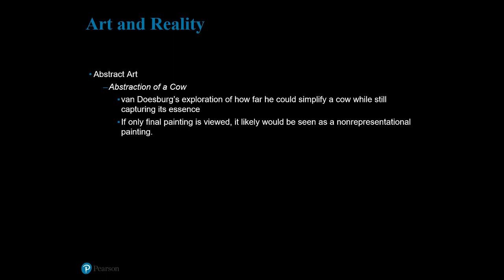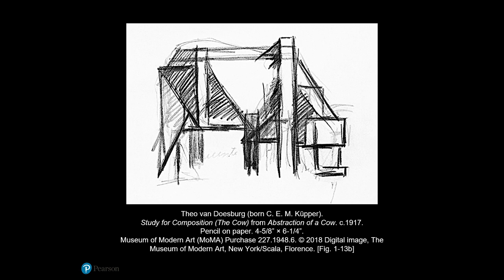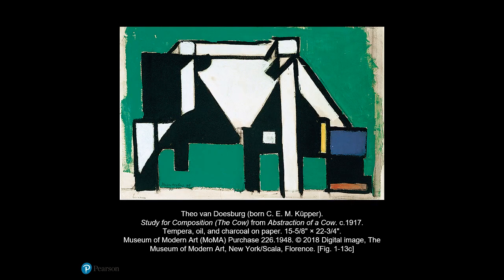In Theo von Duesberg's abstraction of a cow series, you can see what the process of abstraction looks like for one artist. Duesberg starts with a believable, anatomically correct likeness of a cow. He then breaks it down one step at a time, diminishing the degree of true appearance by subtracting dimension each time — reducing the work line by line, becoming more simple each time. At one point he adds color, perhaps to evoke grass, and finally the work reaches its most abstracted form.